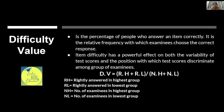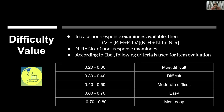The difficulty value range is 0 to 1. You may be asked what the range is — it is 0 to 1. If all students answer correctly, difficulty value is 1, but that item has no discriminatory use. In case of non-response examinees, the formula changes to: DV = (RH + RL) / (NH + NL − NR), where NR = number of non-response examinees who did not attempt the item.